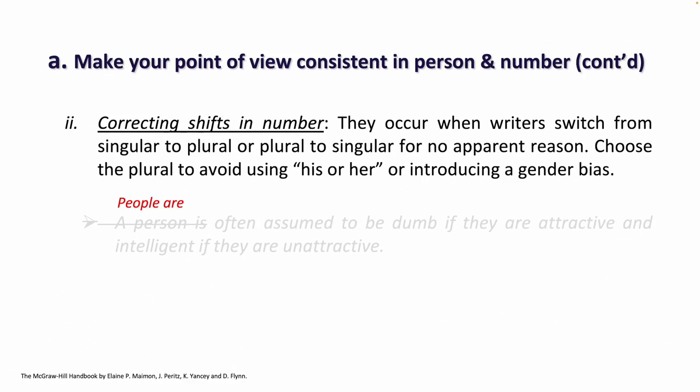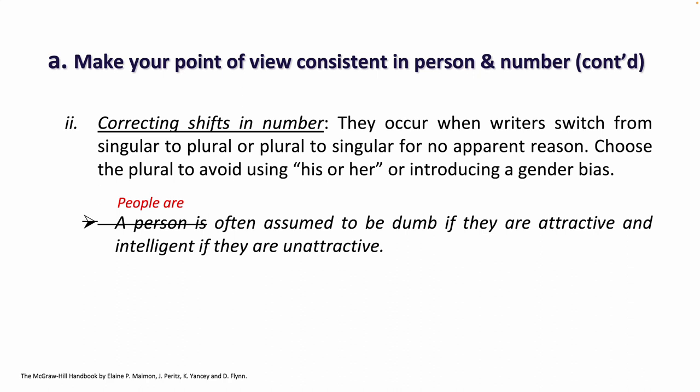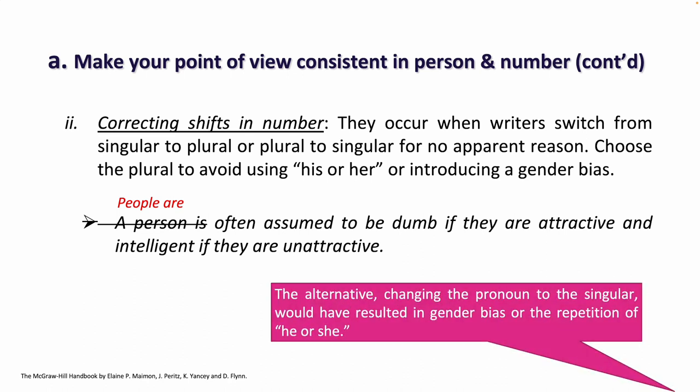The next point will be correcting shifts in number. They occur when writers switch from singular to plural or plural to singular for no apparent reason. Choose the plural to avoid using 'his or her' or introducing a gender bias. Like in this example: 'A person is often assumed to be dumb if they are attractive and intelligent if they are unattractive.' The alternative — changing the pronoun to the singular — would have resulted in gender bias or the repetition of 'he or she.' So we choose: 'People are often assumed to be dumb if they are attractive and intelligent if they are unattractive.'